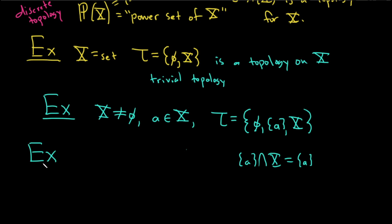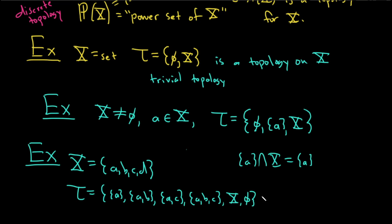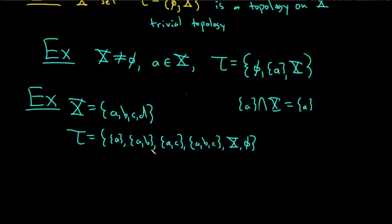Here's a slightly harder example. Let X be the set {A, B, C, D}, and let tau be the collection containing: the singleton {A}, the set {A, B}, the set {A, C}, the set {A, B, C}, the empty set, and the whole space X. This is also a topology for X, though verifying all three conditions by checking every intersection and union would take some work.